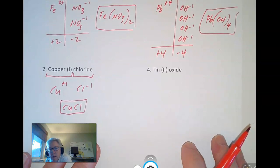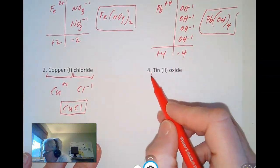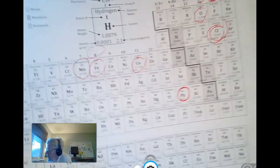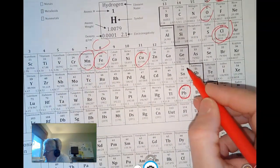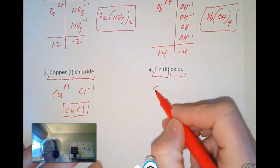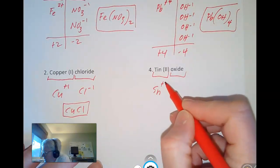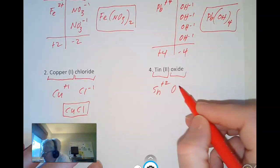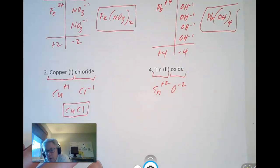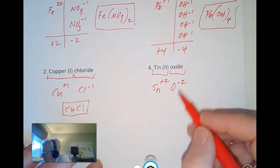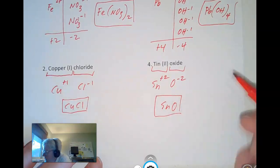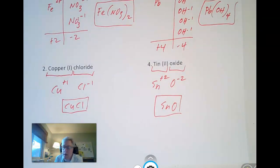Let's do the last one. Tin, Roman numeral 2, oxide. Tin is right here. It's SN. The Roman numeral 2 is telling us that it has a plus 2 charge. Oxide is oxygen, and it has a minus 2 charge. So one of each will cancel out, and my formula will be S, N, O. So that's that.